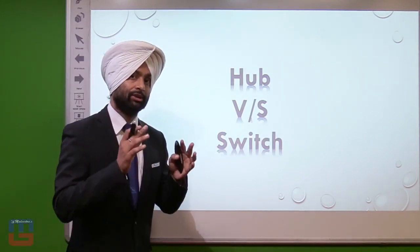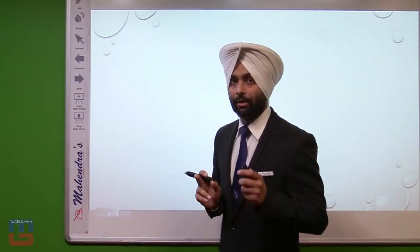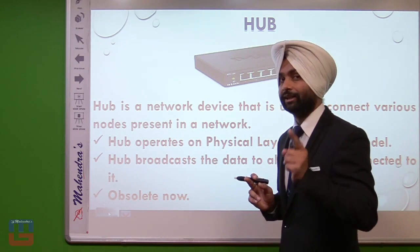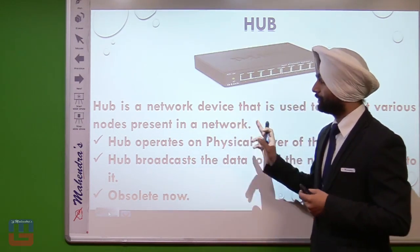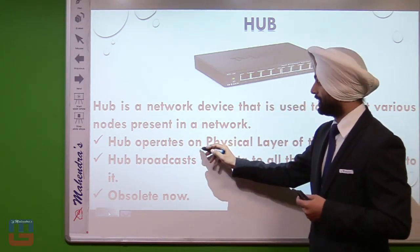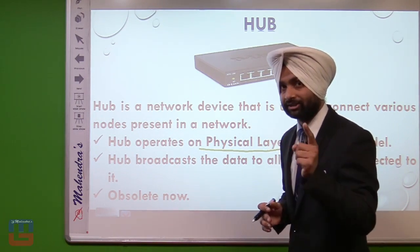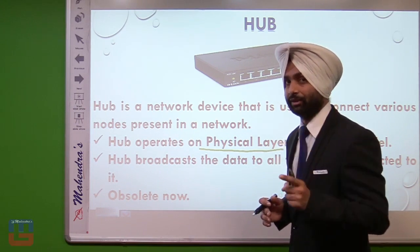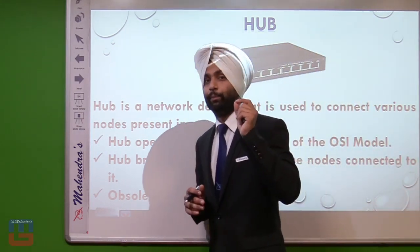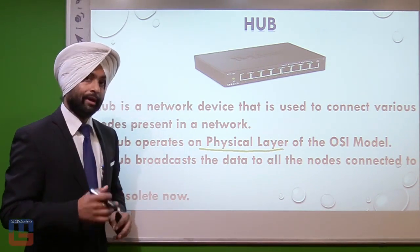The next difference is hub versus switch. Both are networking devices. A hub is a network device used to connect various nodes in a network. Hub operates on the physical layer of the OSI model. The OSI model has seven layers in total. An important point is that hub broadcasts data to all nodes, which increases load over the network, and it is now considered obsolete and not in use.